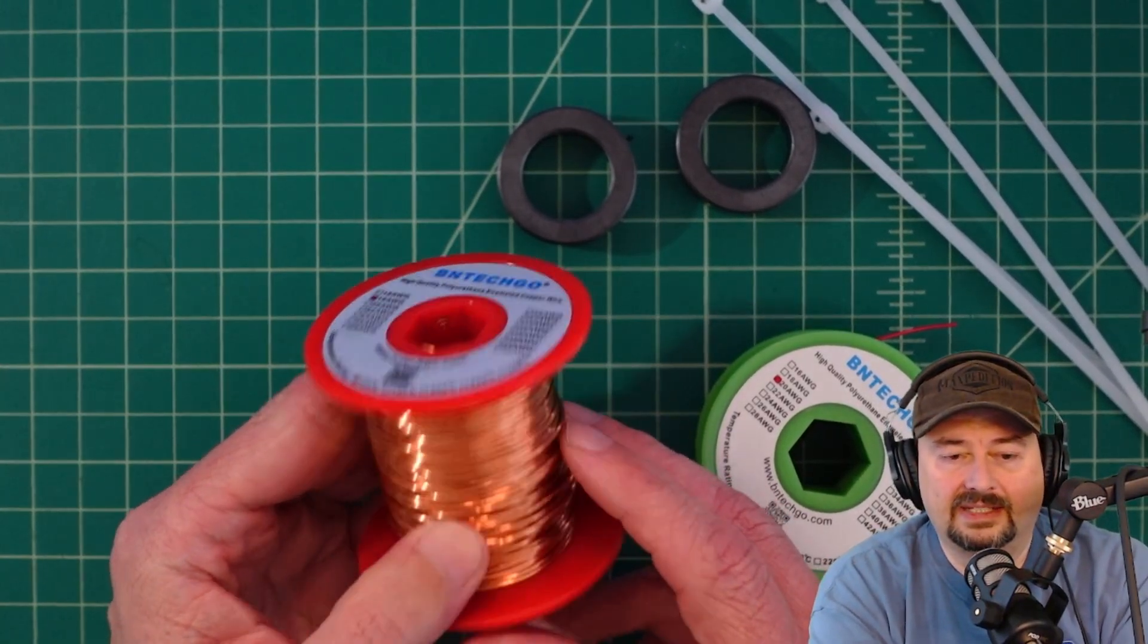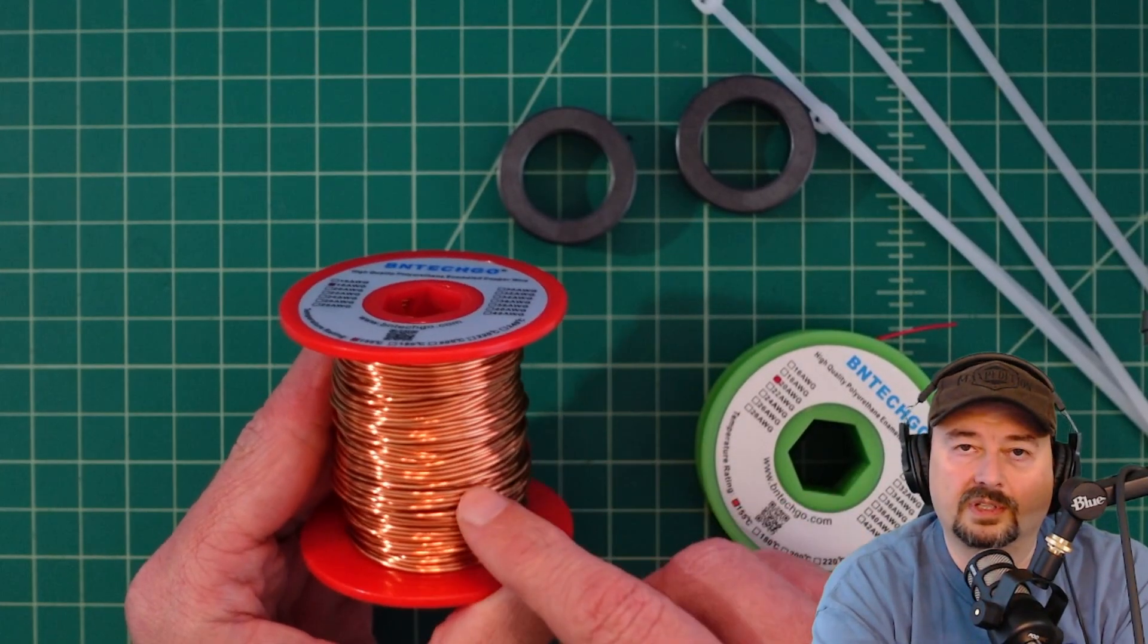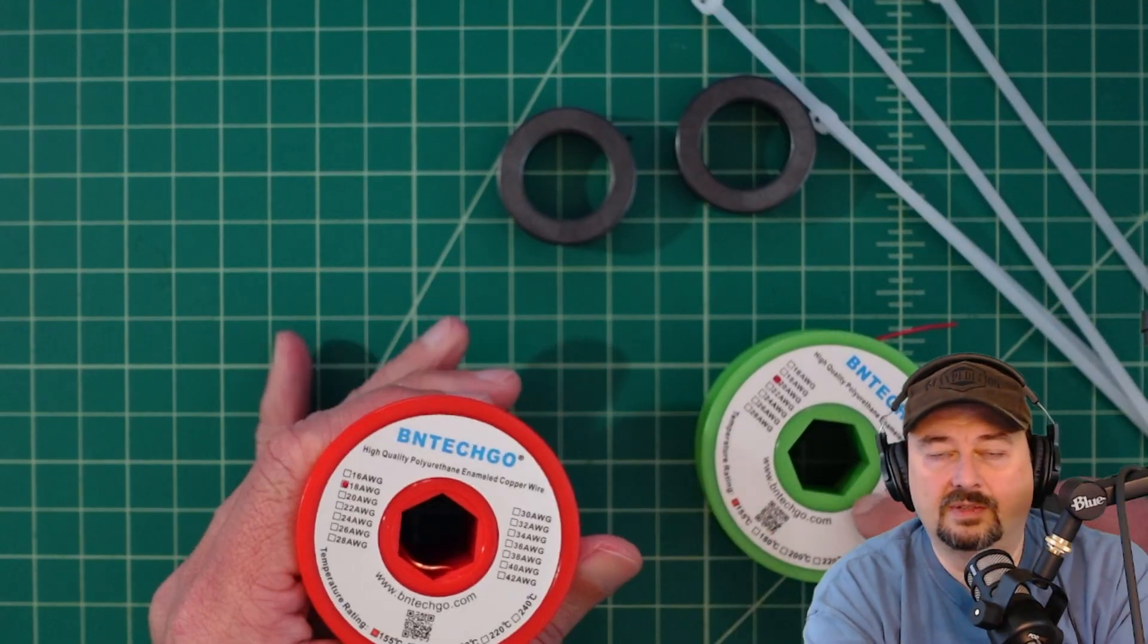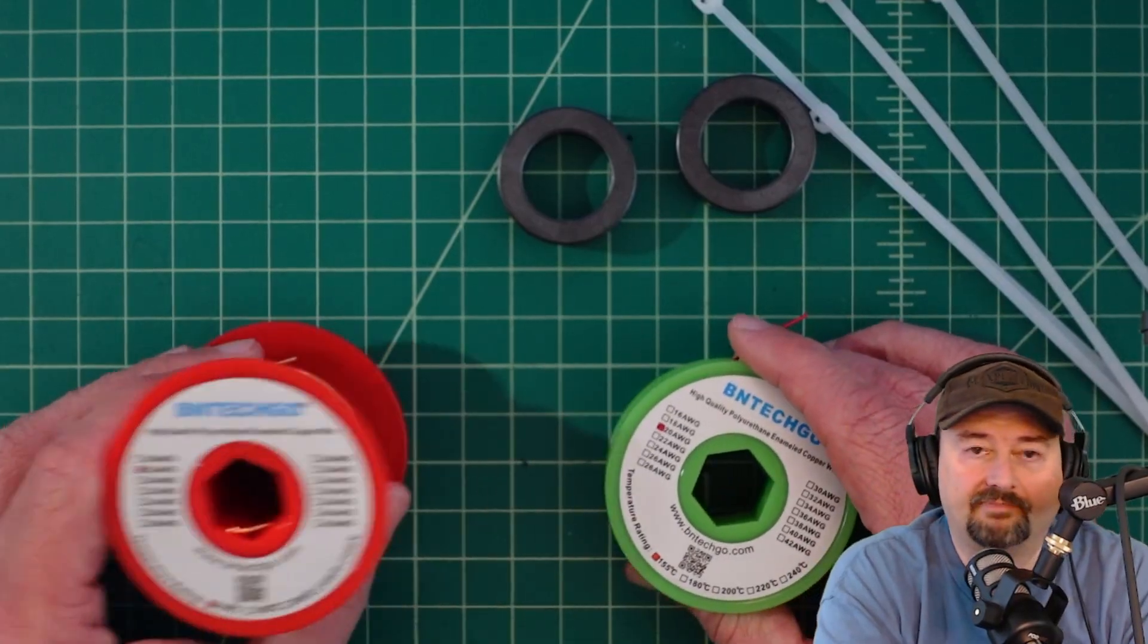Some folks ask why use 18 gauge, it costs more money. I like 18 gauge better because RF travels on the outside of your wire and I get a little bit more surface area out of the 18 than the 20. If all you got is 20 it's going to be fine but I prefer 18.